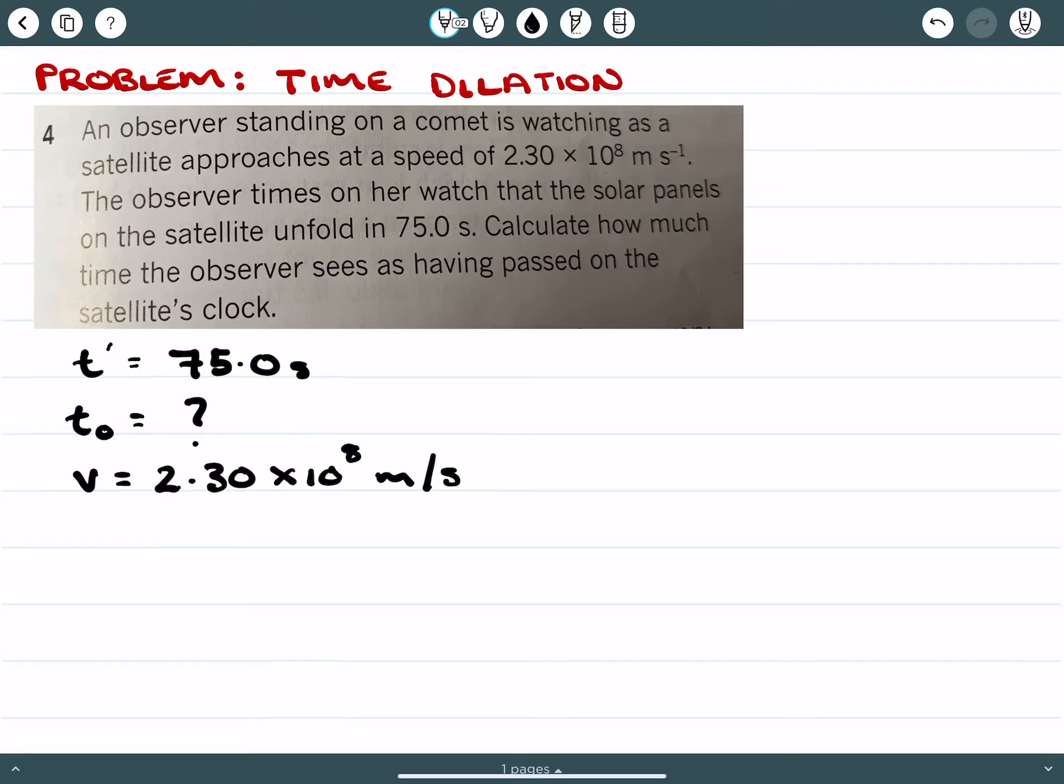Now if we use the formula for time dilation, where we have t prime equals t proper time times the Lorentz factor, and we expand this a little bit further to be able to ascertain what the Lorentz factor is.